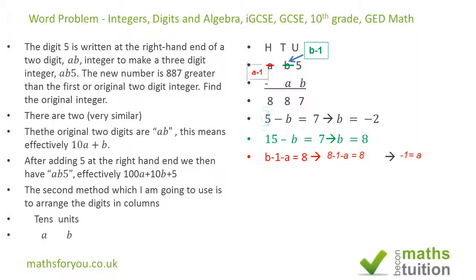So borrow one from a. Then I have a minus 1 and add it to the tens column. We got 18 minus 1, 17 minus a is equal to 8, and a is equal to 9. So now our original integer is now 98.